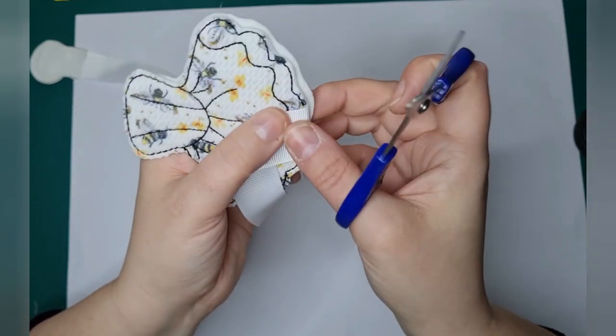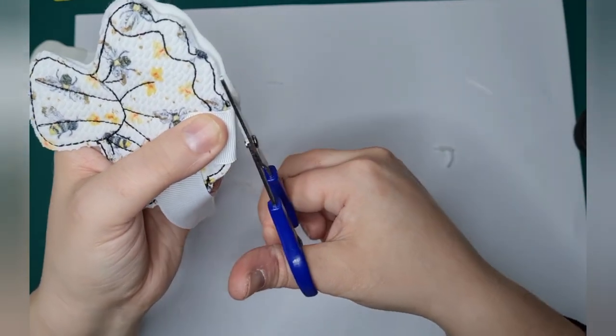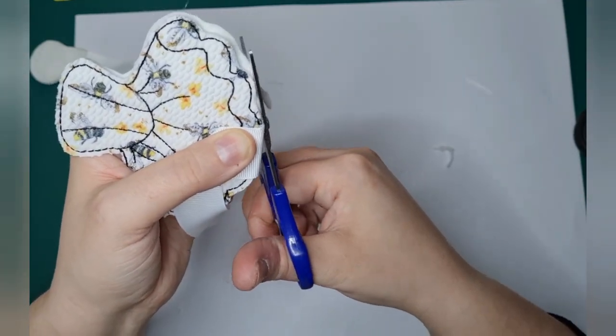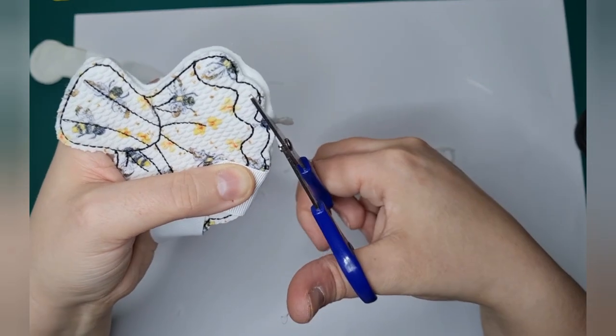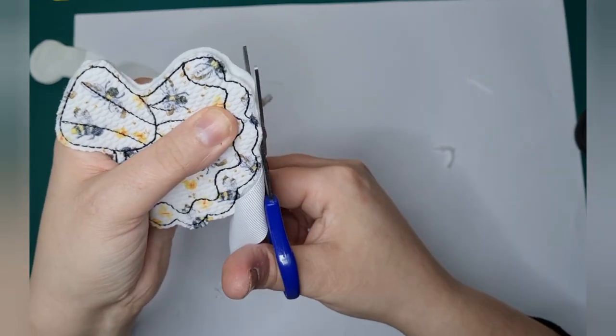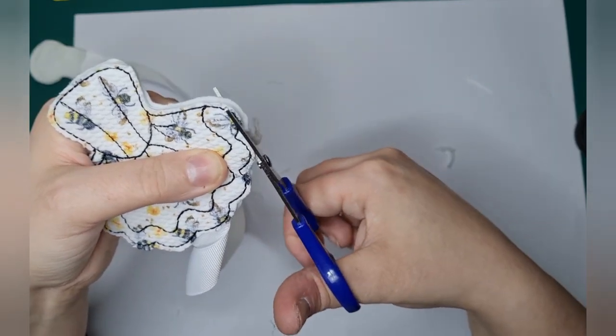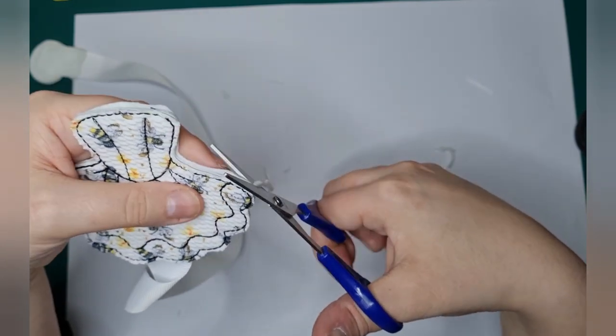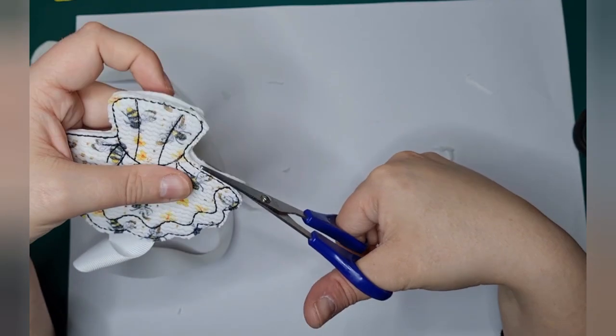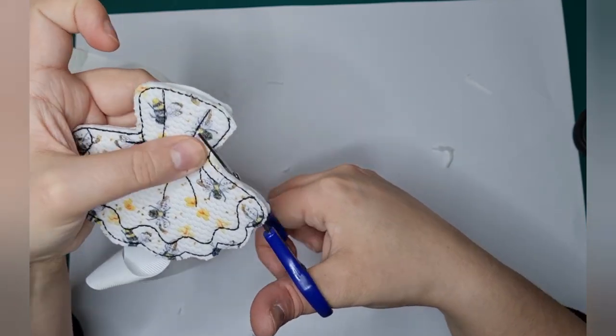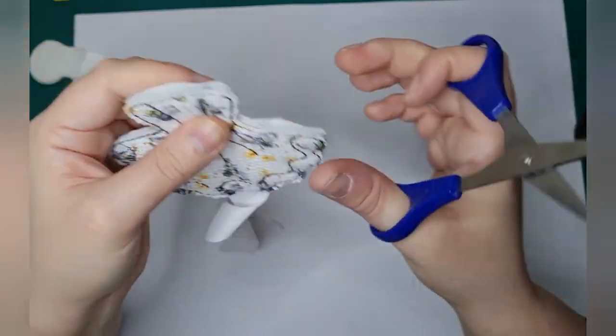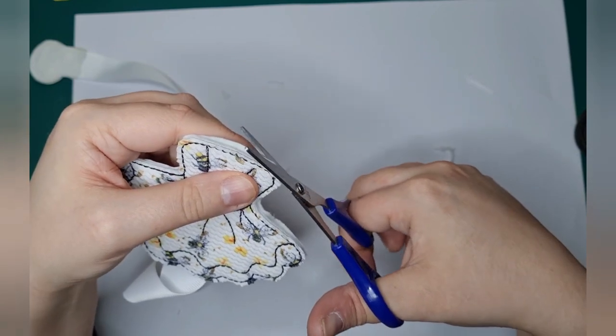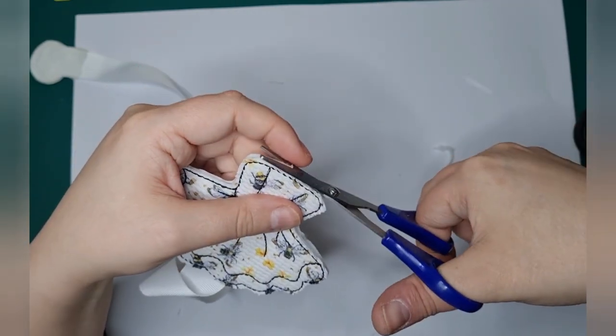There you go. That's one side. Just move your ribbon out the way so you're not cutting into that. And then the opposite side. And the top.